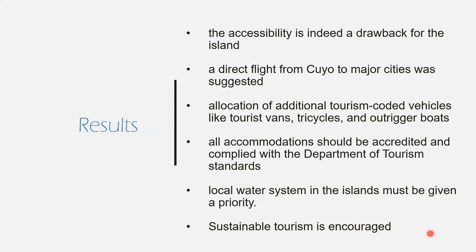For the assessment of tourism potential based on the perception of municipal officials, accessibility is a drawback since the average duration to reach the island is 11 to 16 hours by sea travel. Officials suggested having a direct flight from Cuyo to major cities like Manila, Puerto Princesa City, and Iloilo City. Allocation of additional tourism-coded vehicles like tourist vans, tricycles, and outrigger boats is also vital. For accommodation, Cuyo only offers basic accommodation and all accommodations should be accredited and comply with Department of Tourism standards. Both municipalities currently don't have a tourism master plan, and this must be initially formulated before they can request funding from the province.